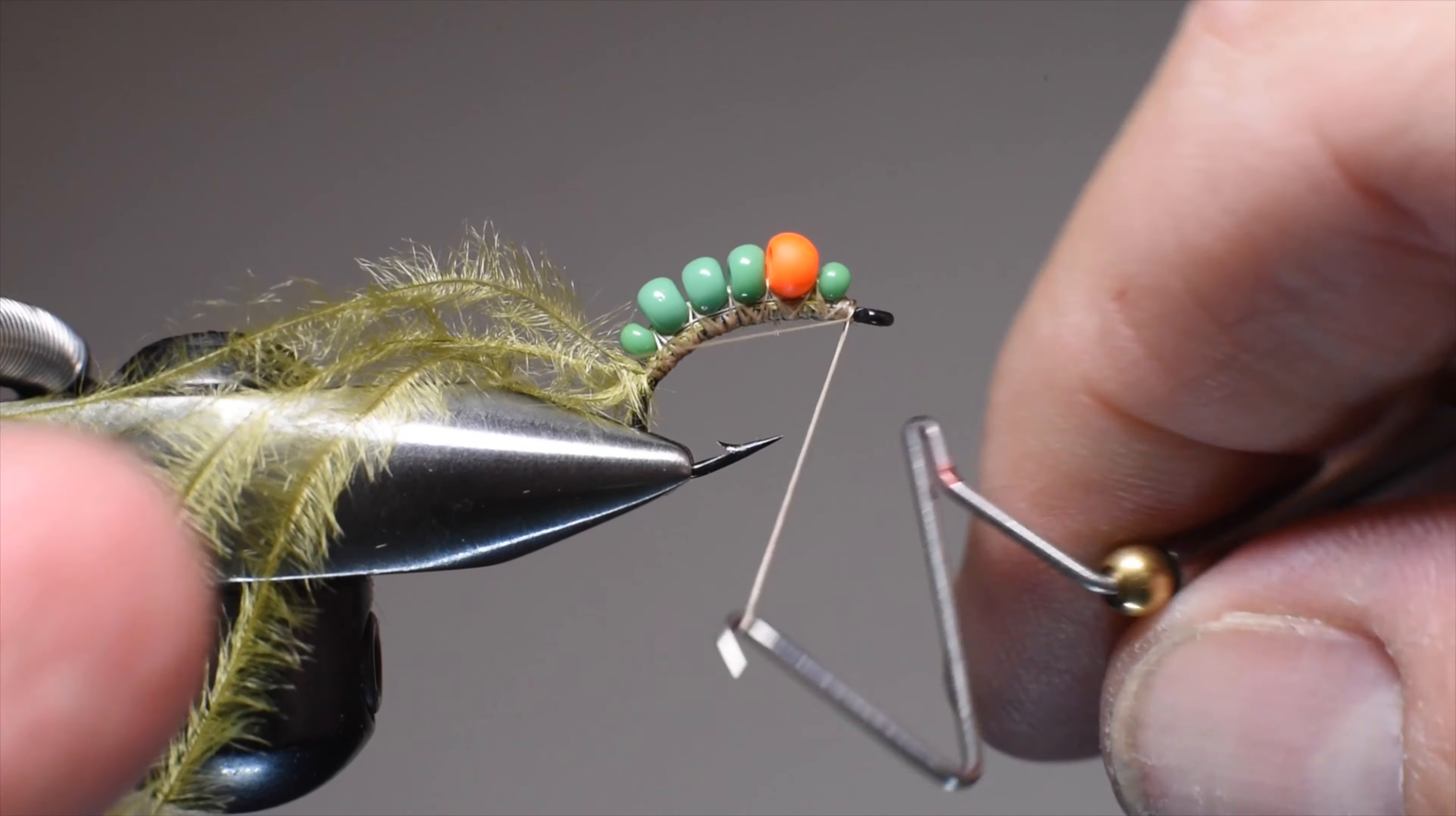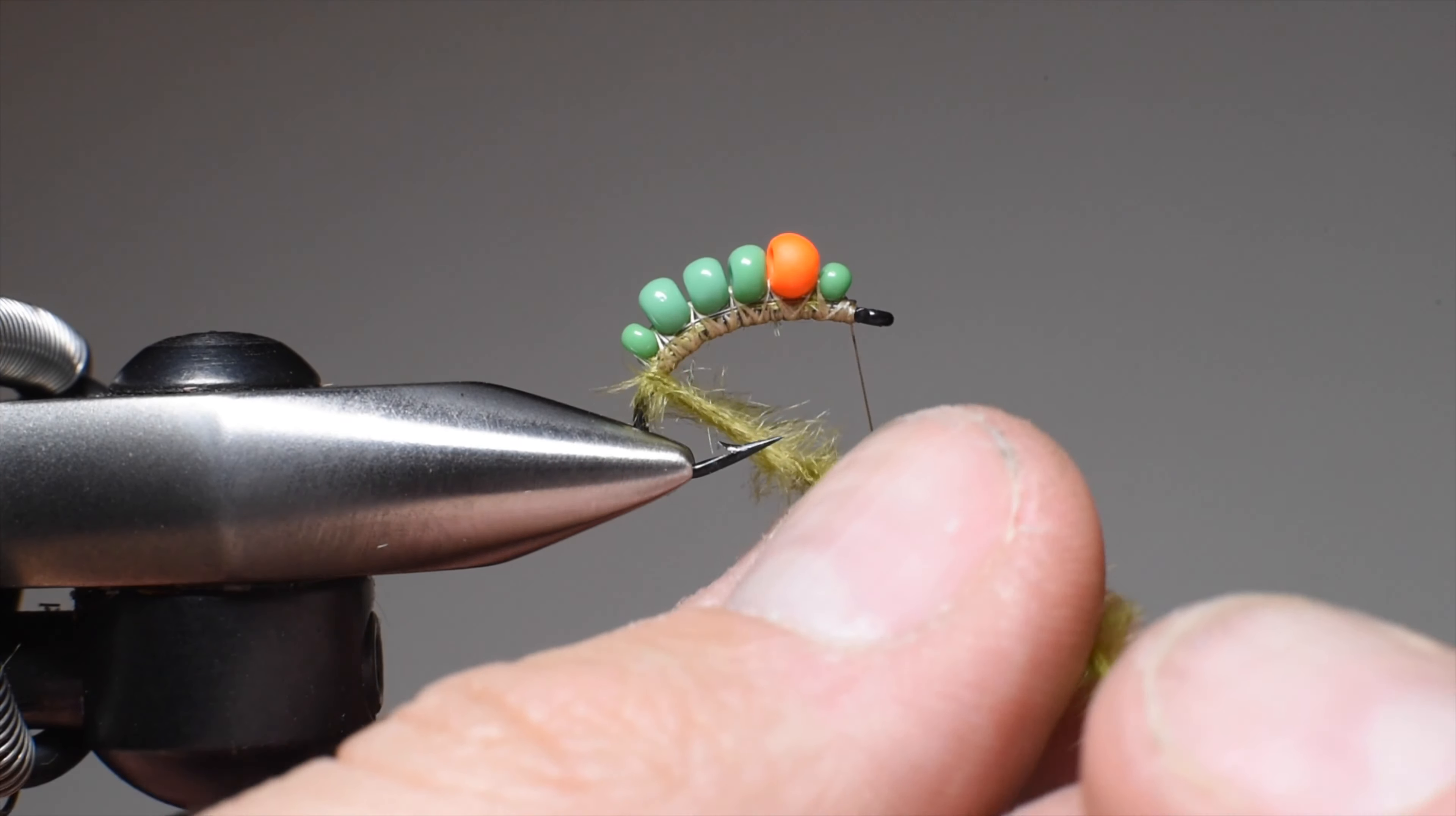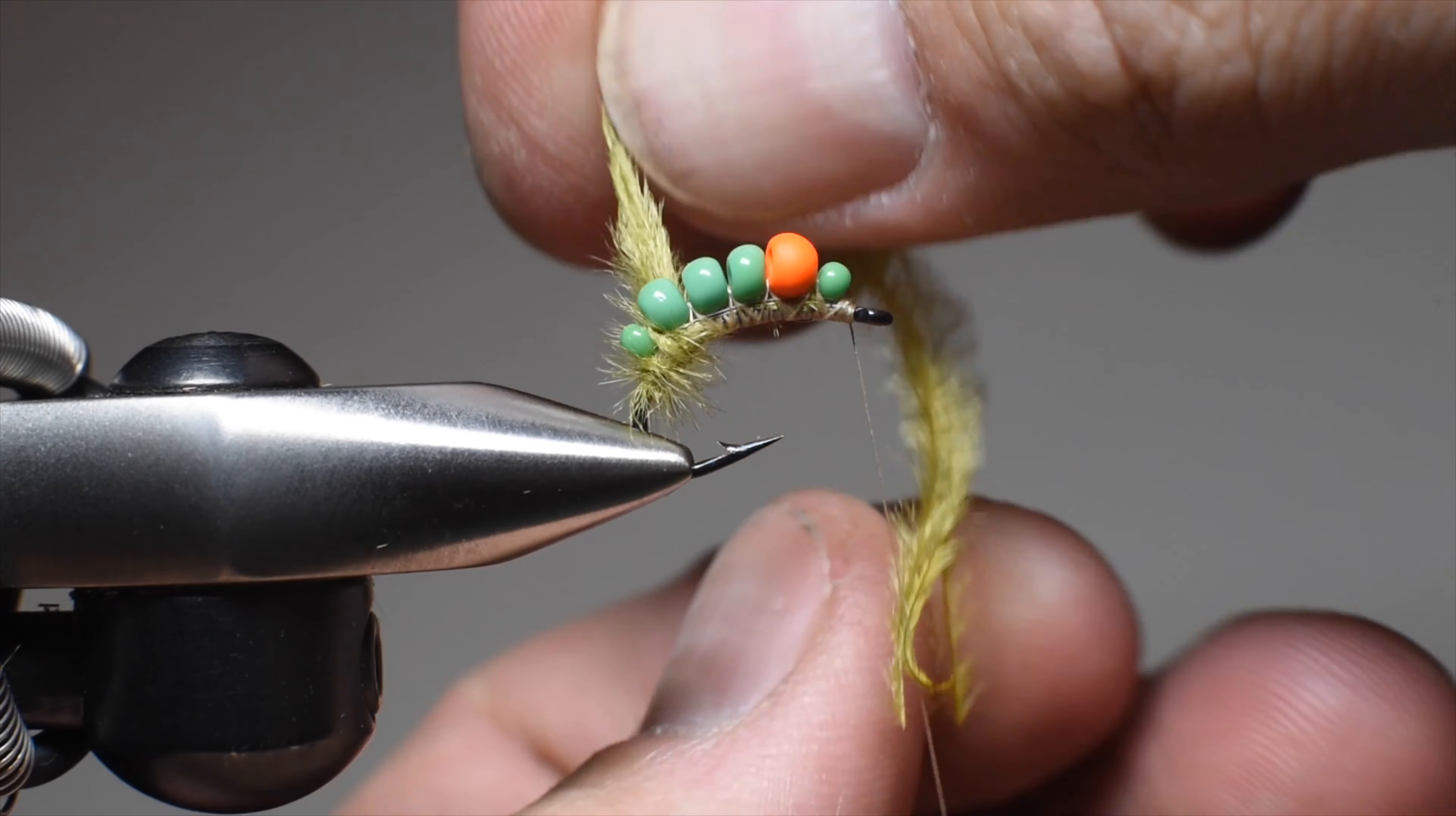At this point, I'll do a single whip finish. You could do a regular whip finish, but it's just to hold my thread in place in case I bump it when palmering. I like to do one or two wraps behind this last bead.